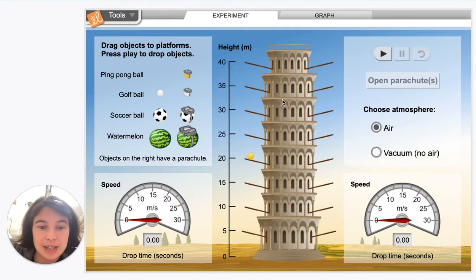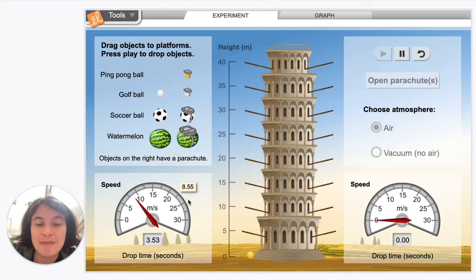So now let's drop this from a height of 25 meters. If this drops from 25 meters, you can see that the velocity increased to 8.55 meters per second. That's barely any faster than last time, and it took 3.53 seconds to fall.